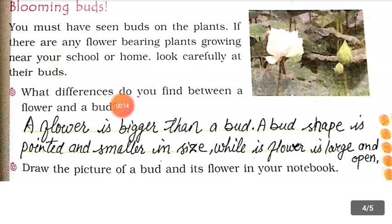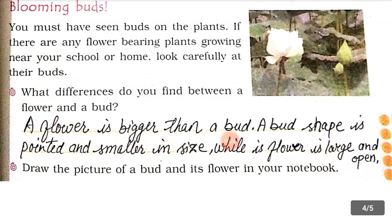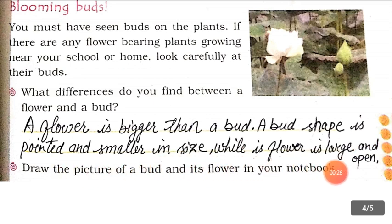What differences do you find between the flowers and a bud? You can say a flower is bigger than a bud. A bud's shape is pointed and smaller in size, while the flower is large and open.